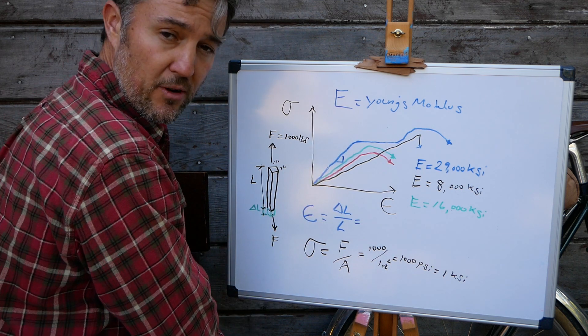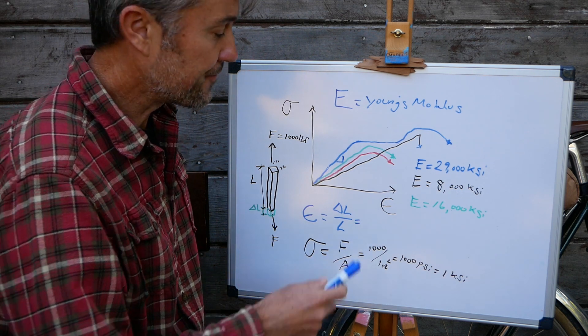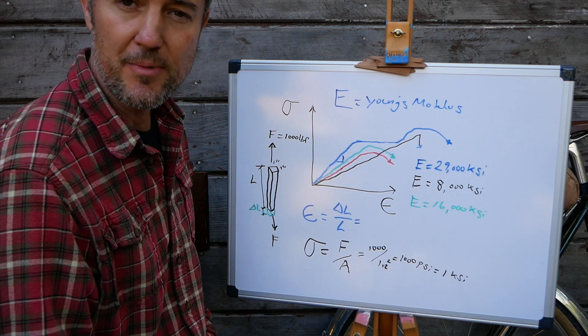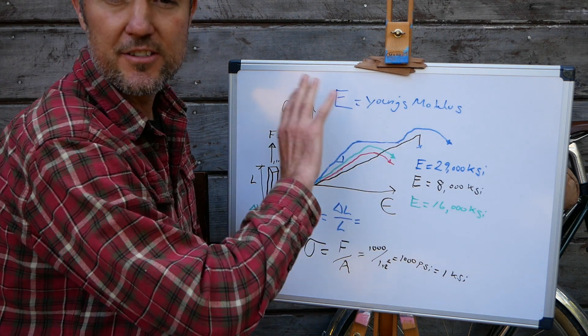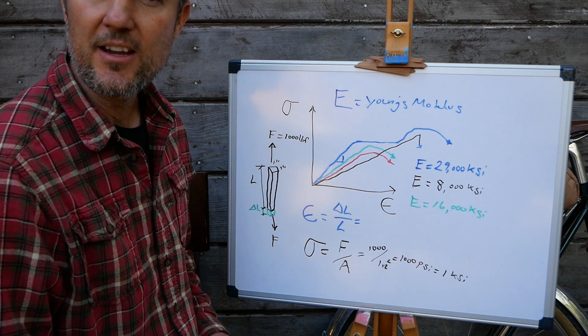Once it goes non-linear, once a material reaches its what's called the yield point, it goes into some sort of non-linear behavior and Young's modulus no longer matters anymore because now the object is either bending or it is breaking.